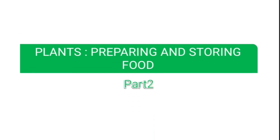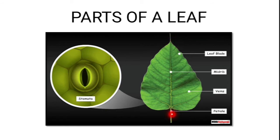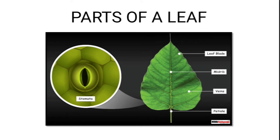Today we are going to continue with the lesson 'Plants Preparing and Storing Food.' We have already studied parts of the leaf: in the middle there is a midrib, then along the sides of the midrib there are veins. There are other leaf parts also, like the leaf blade and the petiole. If you magnify any part of the leaf, there are tiny pores called stomata. This is a magnified image of the leaf — they look like eyes, but these are tiny pores.